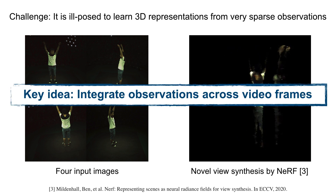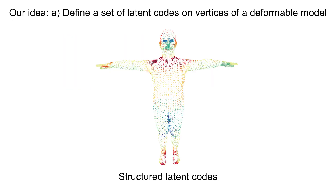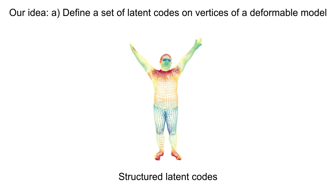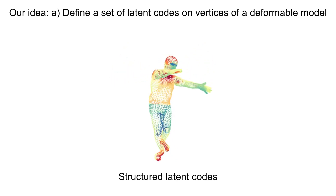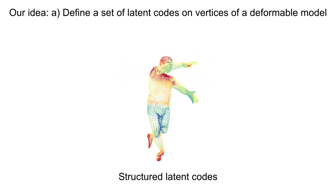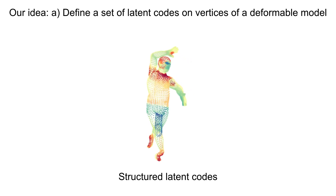Our key idea is to integrate observations of the performer across video frames. To this end, we define a set of latent codes on vertices of a deformable model. These codes are used with a network to represent local geometry and appearance of a human. By controlling the code locations with human poses, we are able to represent a dynamic human.